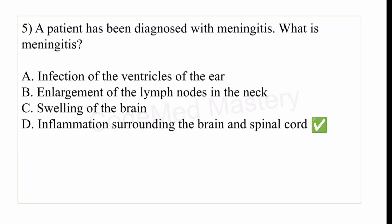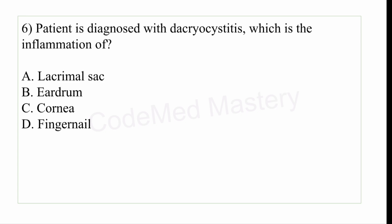Next question: a patient is diagnosed with dacrocystitis, which is the inflammation of — option A: lacrimal sac, option B: eardrum, option C: cornea, option D: fingernail. The right answer is option A, lacrimal sac. Dacrocystitis is an inflammation of the tear sac, also known as the lacrimal sac. It is caused by a blocked tear duct that traps tears, leading to bacterial growth.